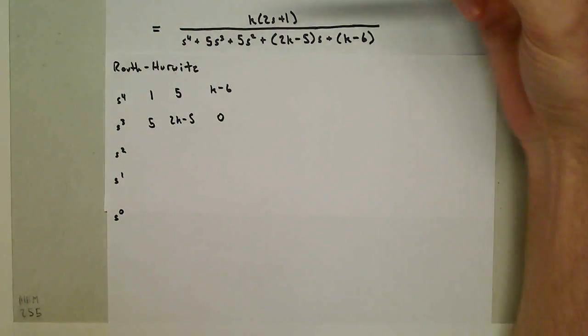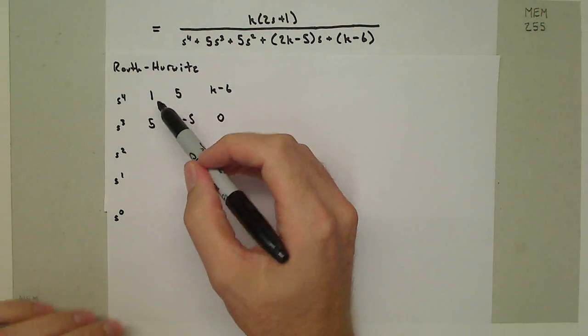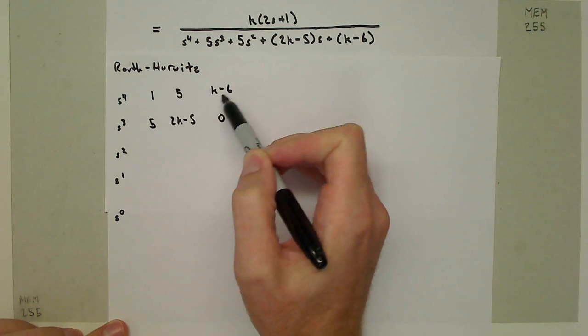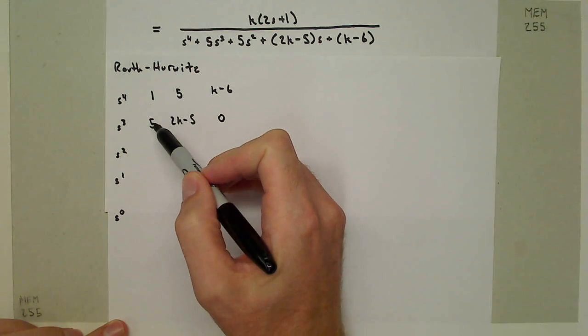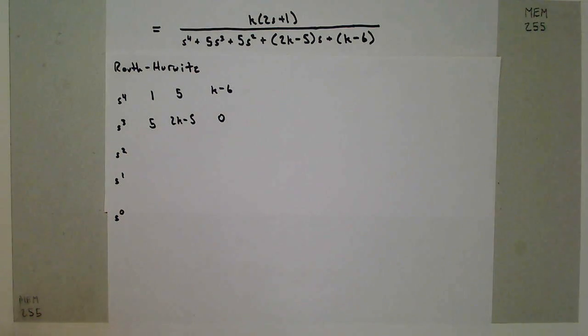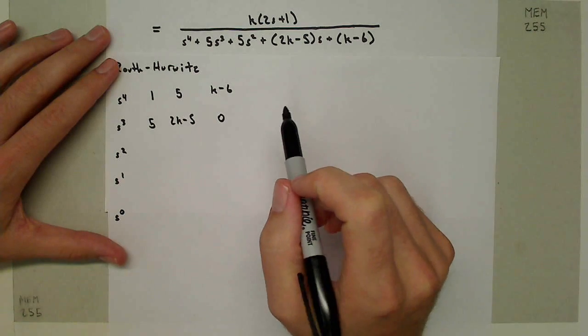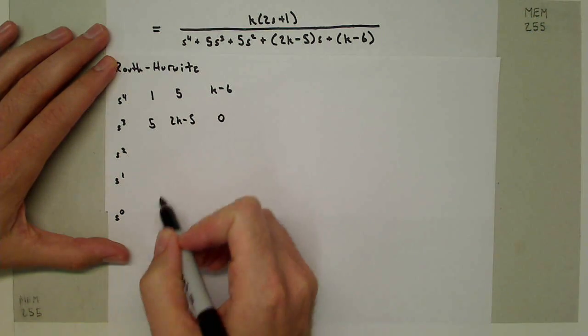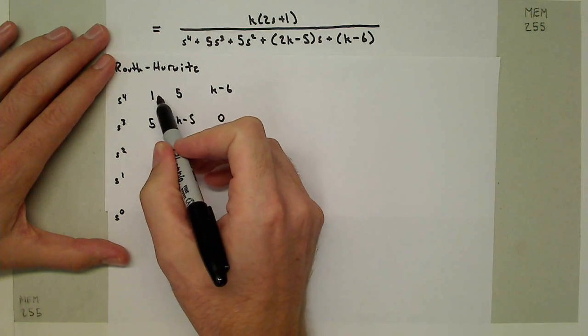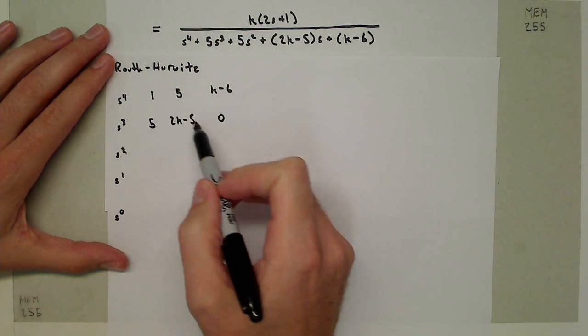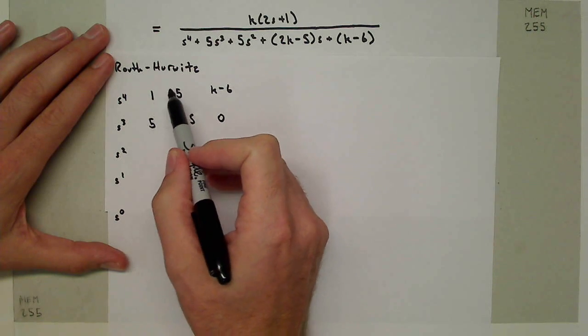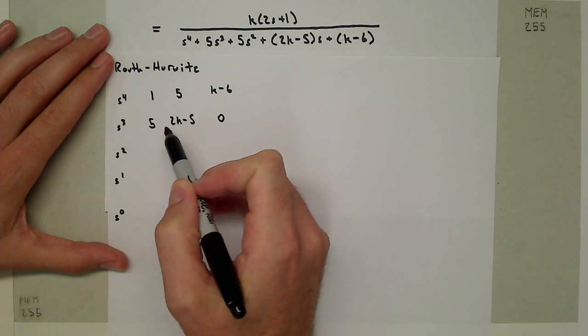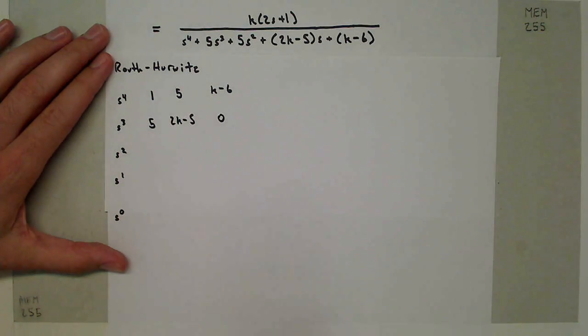I put the coefficients like so, the top coefficient, the next coefficient, alternating in this zigzag fashion. Now what I do is I have to populate these other sections of the table, and to do that I have to do a relatively complicated mathematical operation - I have to take the two-by-two determinant of these four terms, the negative of that, and then divide by this term.